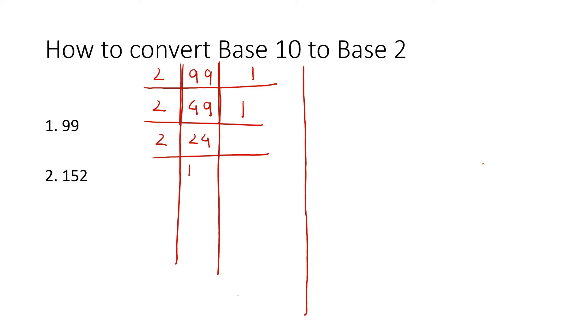This is 12, so there's no remainder here, so 0. This becomes 6, no remainder once again, so 0. 2 and 3, no remainder.